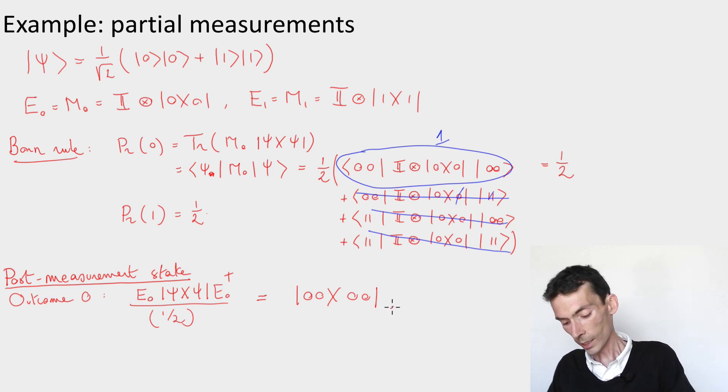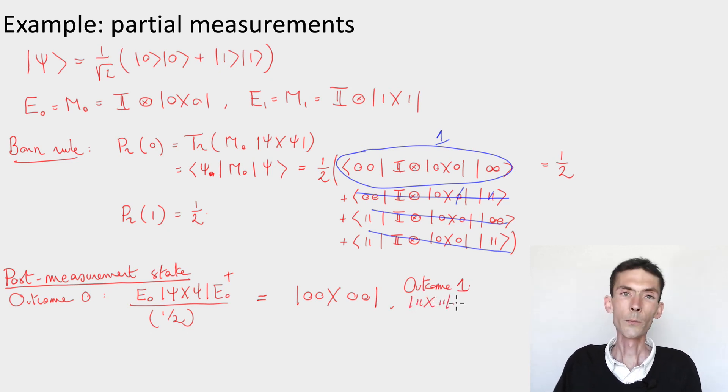Similarly, we could do the calculation for the outcome 1, and see that in that case we get naturally the |1,1⟩ part of the state.